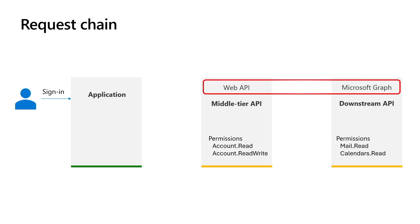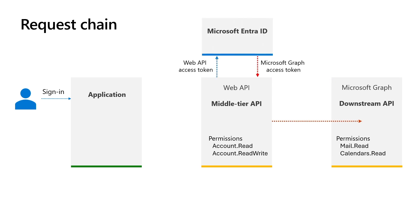In most cases, each API also has a unique identifier or audience. If you are not familiar with the audience in OAuth2 terminology, the audience claim refers to a unique identifier of the intended application or API that should accept the token. The On-Behalf-Of flow solves this problem by exchanging the access token with a new one that can be used to call a downstream API.